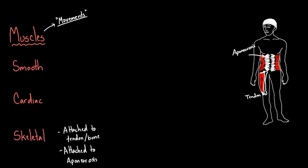You might wonder: does cardiac mean heart, and is that the only type of cardiac muscle? The answer is yes — this is your heart muscle right here. The only type of cardiac muscle we have in our body is related to the heart. In the heart you can find specialized cells that are so interesting and different from skeletal and smooth muscles that they got their own name and category. You can only find cardiac cells in the heart.